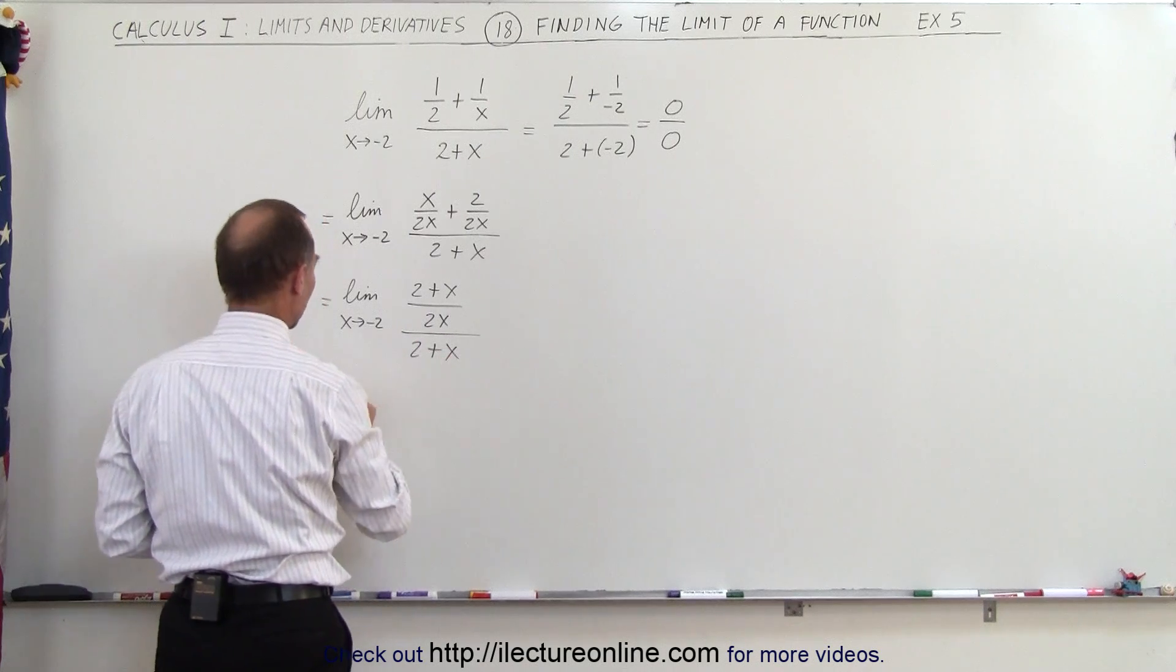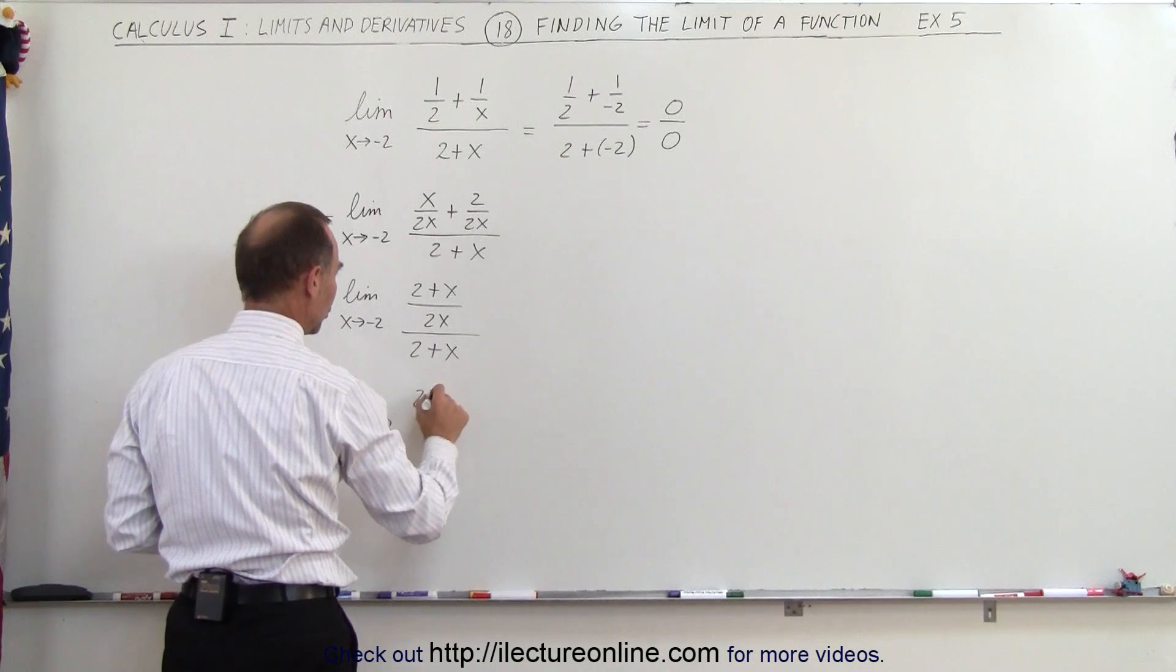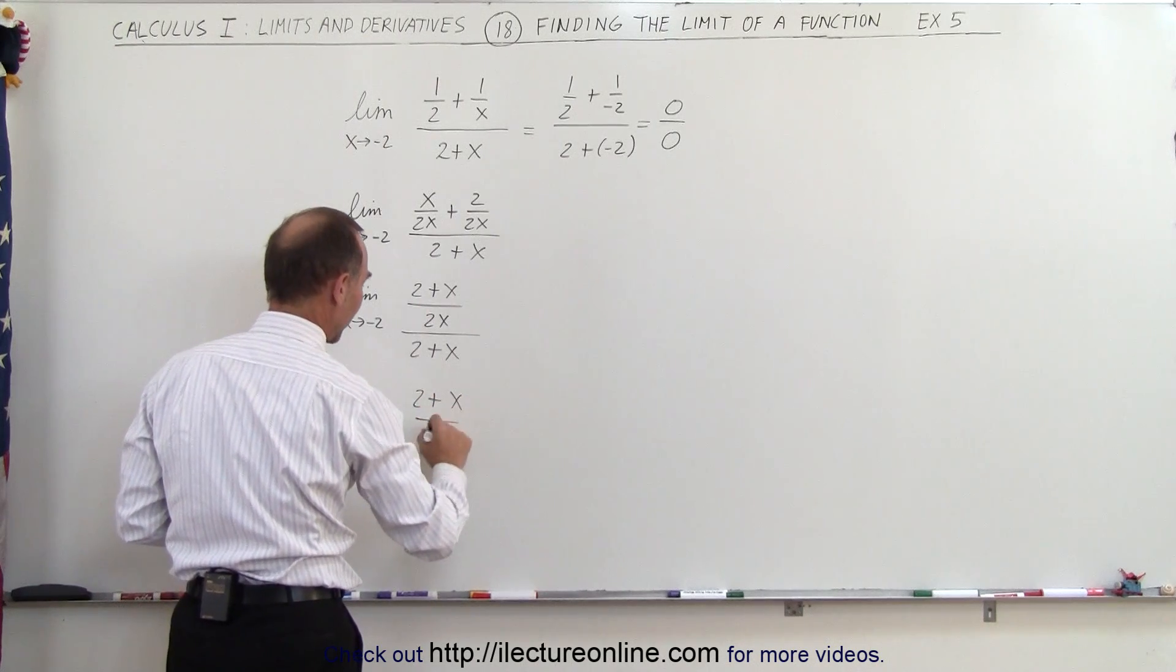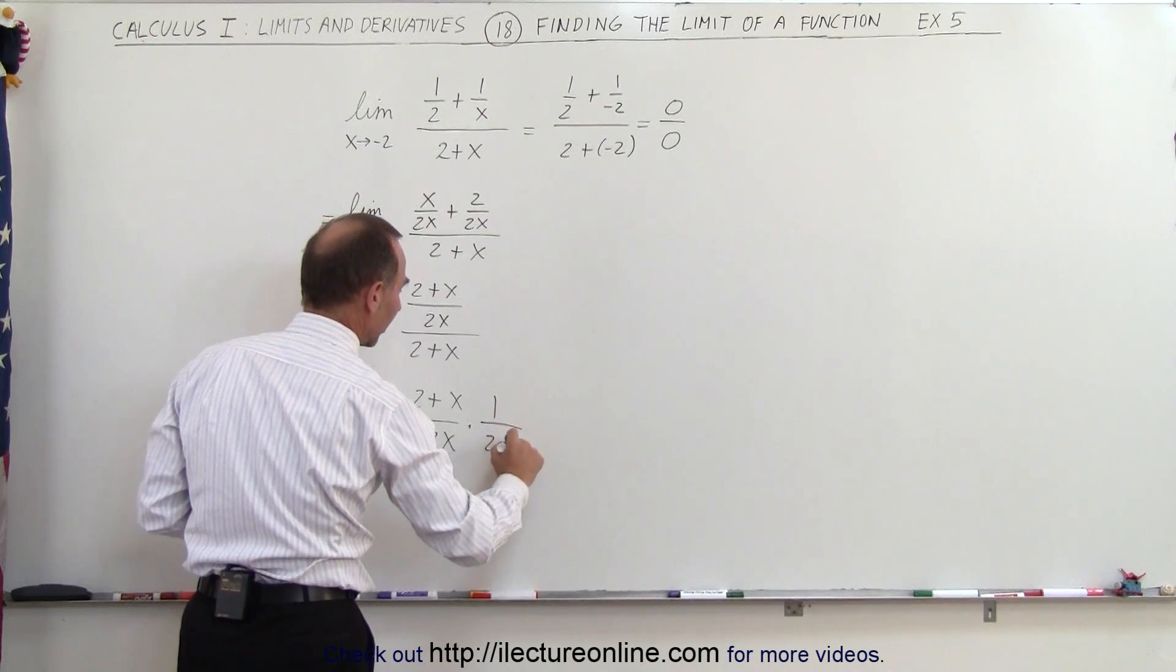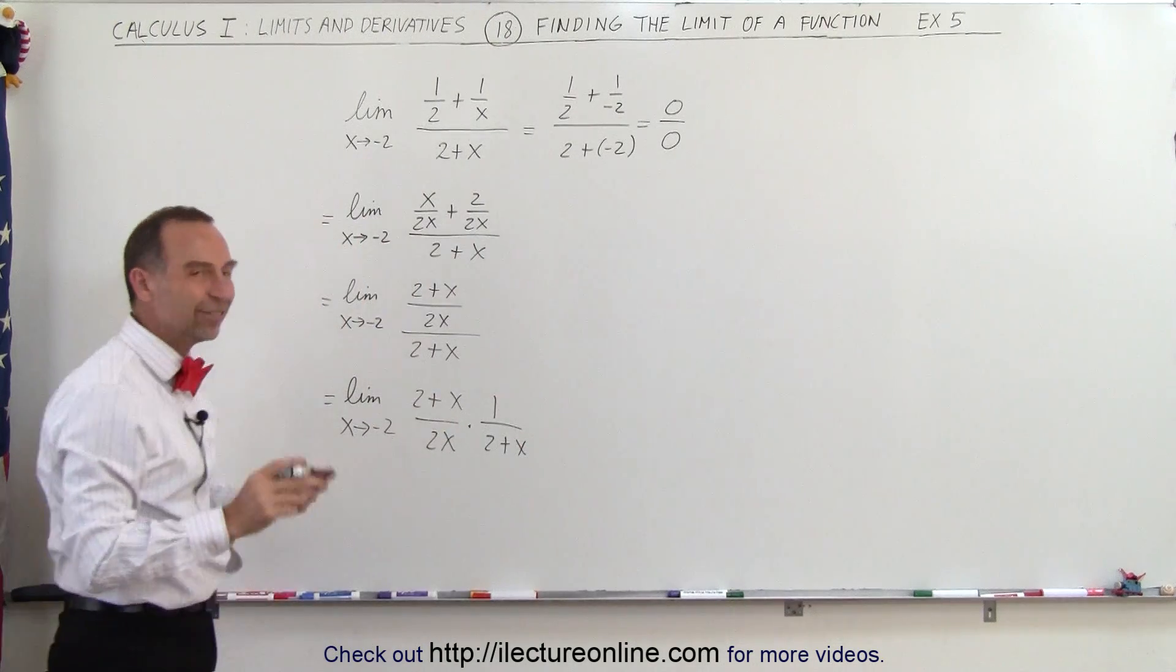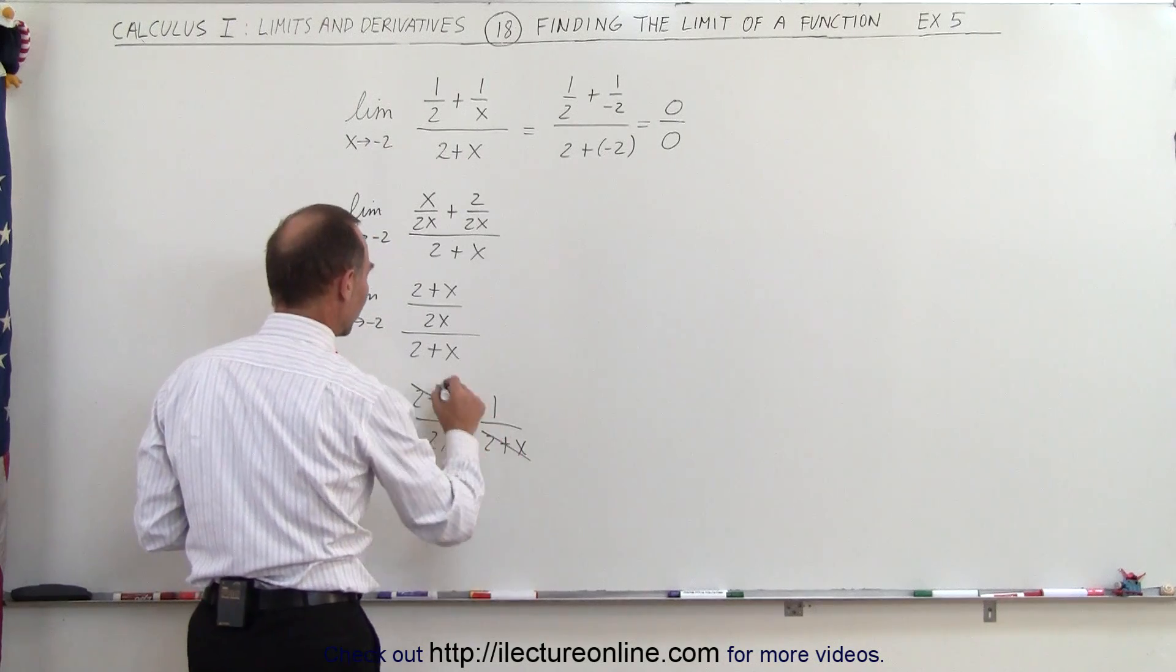So now this can be written as the limit as x approaches negative 2 of 2 plus x divided by 2x times 1 over 2 plus x. The reason why I write it like this it's easier to see now that the 2 plus x cancel out.